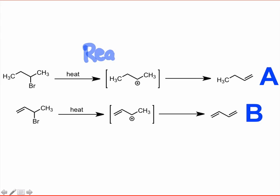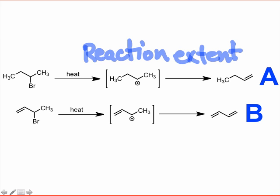When making predictions about the relative extent of two related reactions, we appeal to the stability of intermediates and products. In the example you see here, we should expect elimination B to proceed to a greater extent than elimination A, because B results in the formation of a stable conjugated system, while A does not.